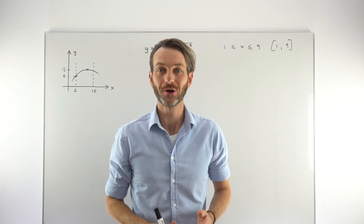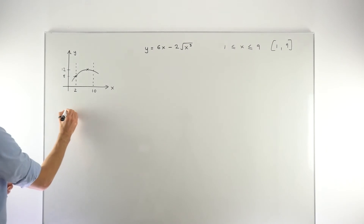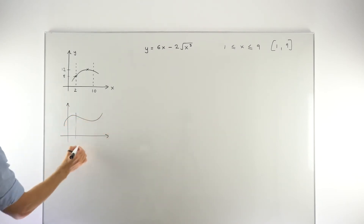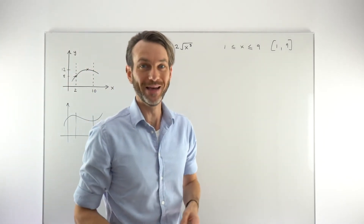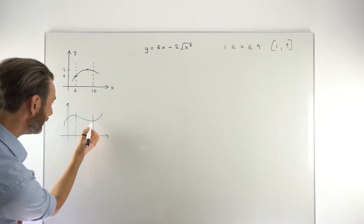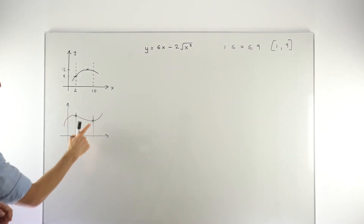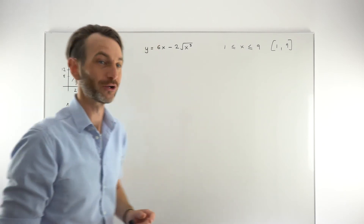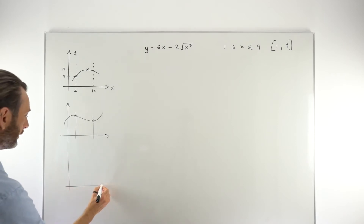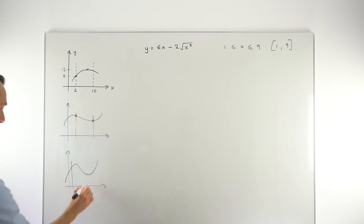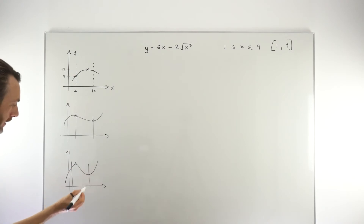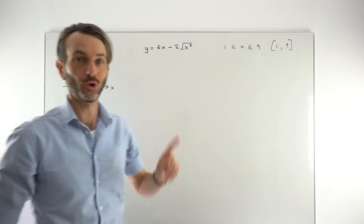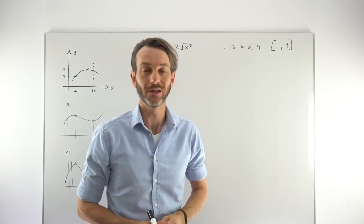The important thing is that the maximum and minimum values always occur either at the endpoints or at the stationary points. You can try drawing any curve, define a closed interval, and see that the highest and lowest points are always either endpoints or stationary points. So when we tackle our actual problem, it revolves around finding the stationary points and then doing a few checks. That's the theory behind what we're looking for in these problems.